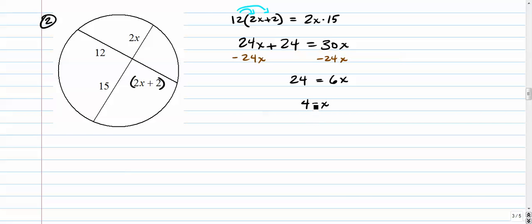This one's probably a good idea to plug back in to check it. 2 times 4 is 8, 8 plus 2 is 10, 12 times 10 is 120. This way, we have 2 times 4 is 8, 8 times 15 is also 120. That's a good thing—both products are the same.